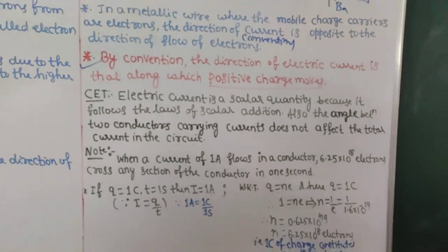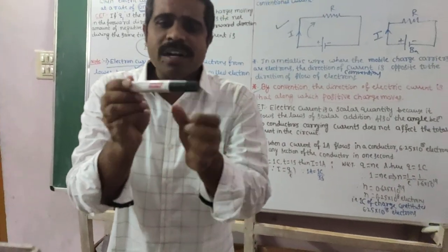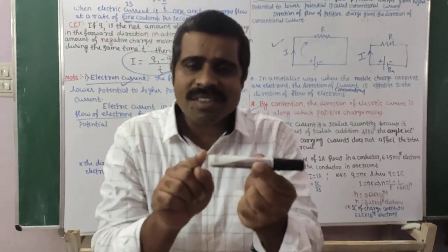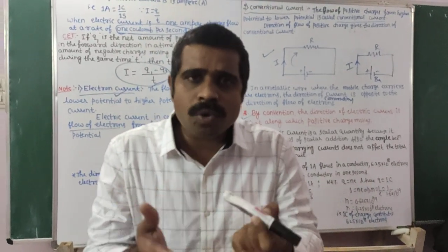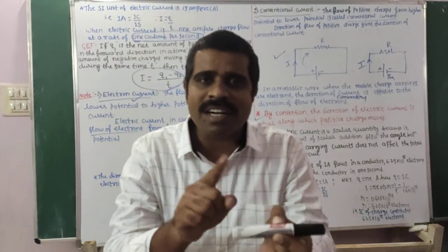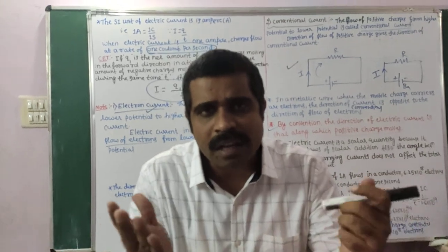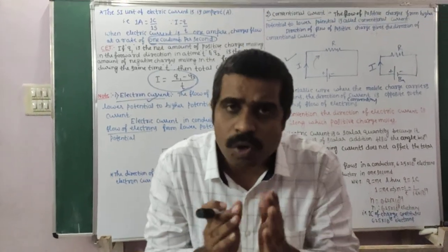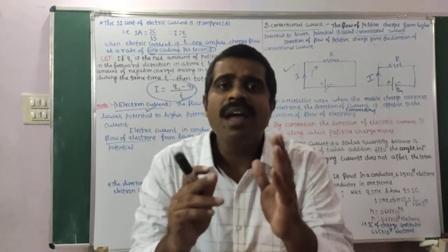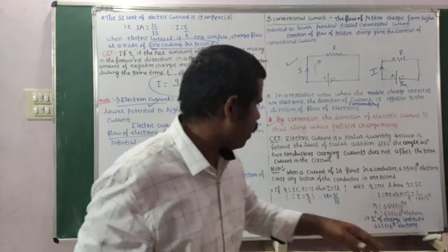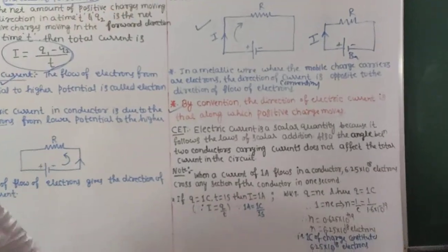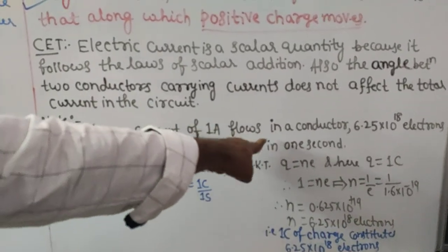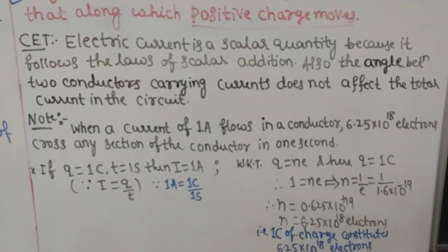Now, when 1 ampere current flows in a conductor, how many electrons cross any section of that conductor per second? The answer is 6.25 into 10 to the power of 18 electrons cross any section of the conductor in 1 second. When a current of 1 ampere flows in a conductor, 6.25 into 10 to the power of 18 electrons cross any section of the conductor.